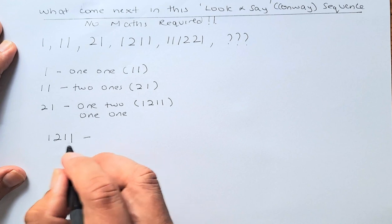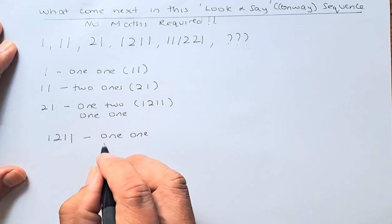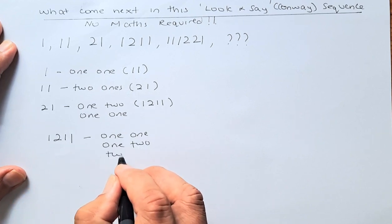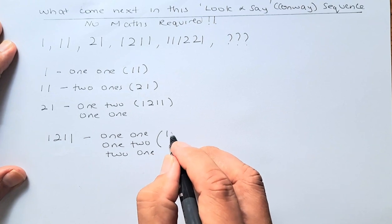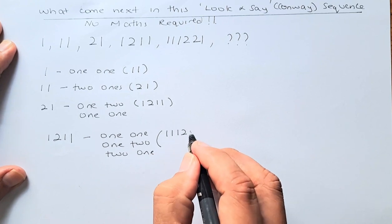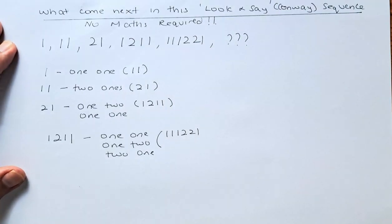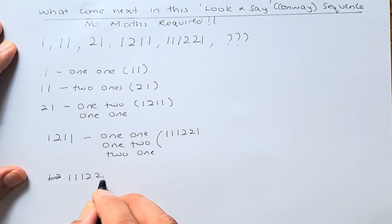How do you write this in English? It's going to be one one, one two, two one. That's how you get that. So the next term is 1 1 1 2 2 1.